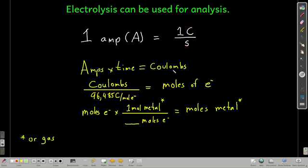What you do is if you know how many coulombs pass through your circuit and you know how long it took, you take the amps times the time in seconds, and that tells you how many coulombs of charge passed through your circuit. If you take the coulombs of charge that passed through your circuit and divide by Faraday's constant, which is coulombs per moles of electrons, that tells you how many moles of electrons you pass through your circuit.